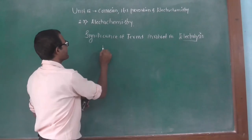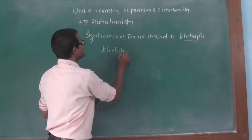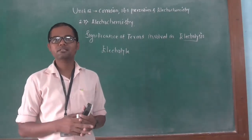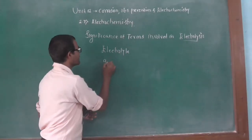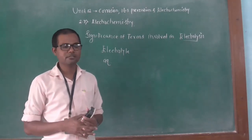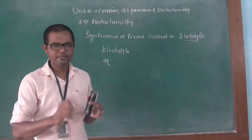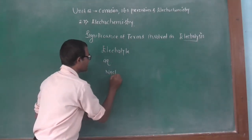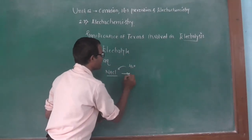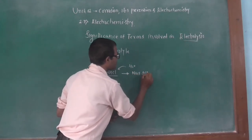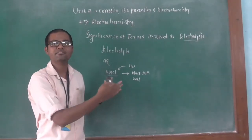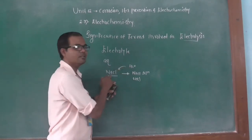A question comes to mind: what do you mean by the electrolyte? Electrolyte is a substance which is in aqueous form — that is, aqueous solution — where water is used as a solvent. For example, when we add water to NaCl, we get the formation of NaCl solution. That solution is an aqueous solution, meaning sodium chloride is in aqueous state, and water is the solvent.